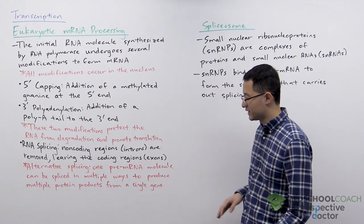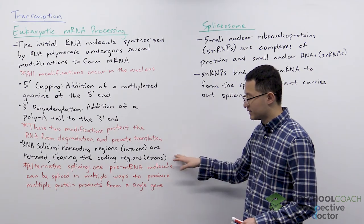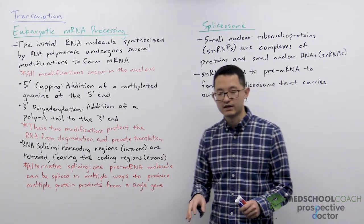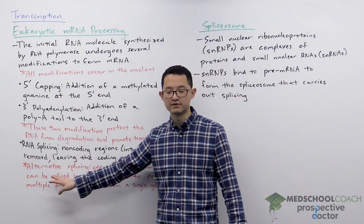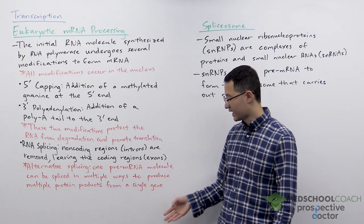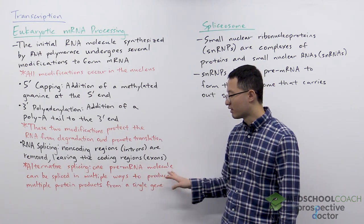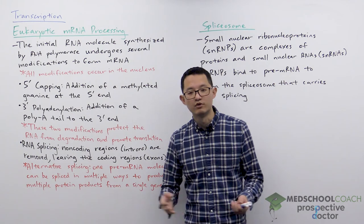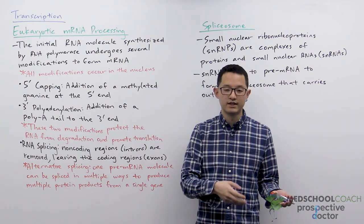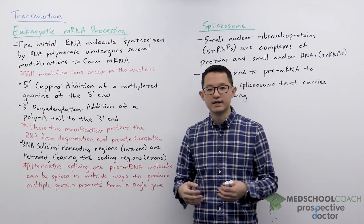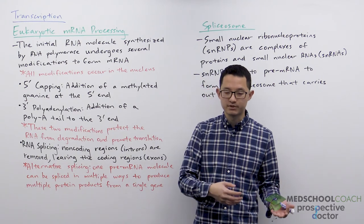Now an important thing to understand here is that what is considered an intron and what is considered an exon is variable because of what is called alternative splicing. Alternative splicing means that one pre-mRNA molecule can actually be spliced in multiple ways. So this means that sometimes an intron that is removed can be kept and sometimes an exon that is kept can be removed.